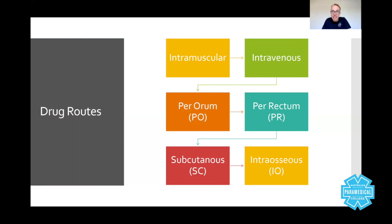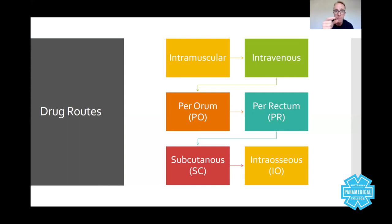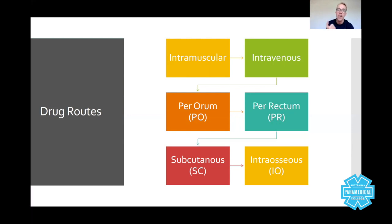Intramuscular means into the muscle. Once you've injected it, you have no control over what happens — no control over the rate or how much is absorbed. Most intramuscular routes expect you to give only three to five millilitres, a very small dose. Once given, the muscle absorbs the drug and you'll start to see a response. In comparison, intravenous allows you to give a dose, stop, and reassess — what we call titrate to response. You give some, and once they've responded, you stop.